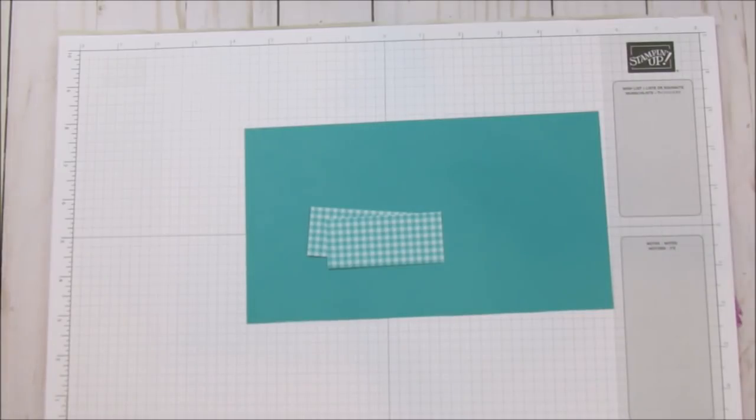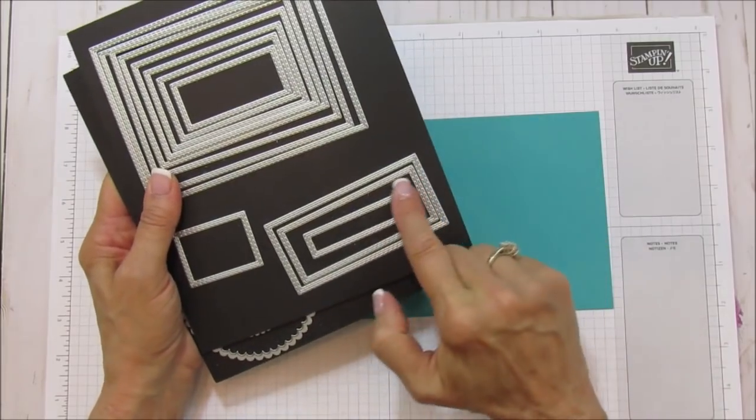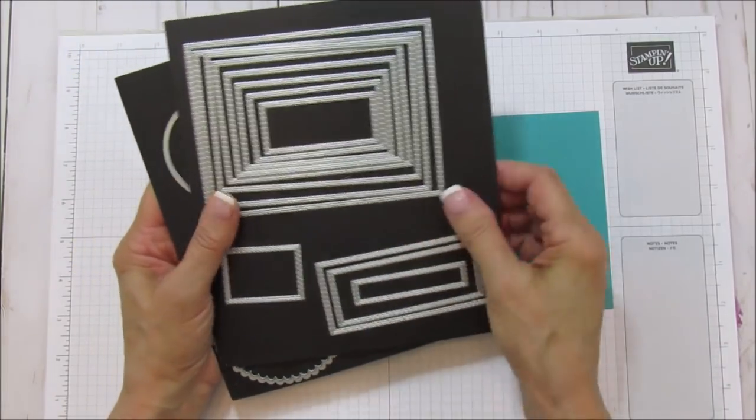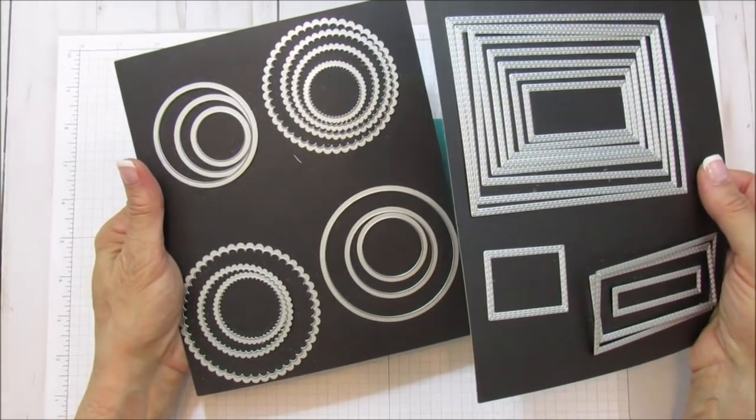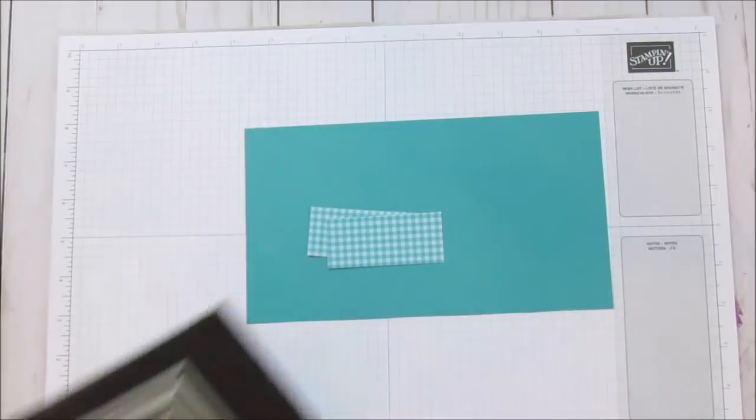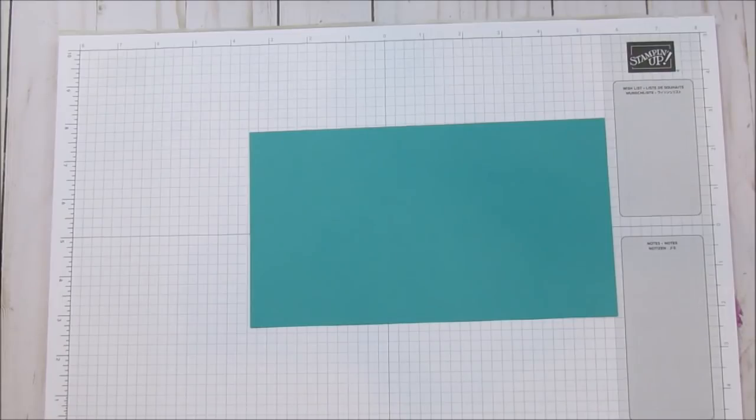The dies we're using today are the stitched rectangles. I've already pulled out the ones we need. Then a circle and a scallop for the layering circles. You do need both of those for this project.